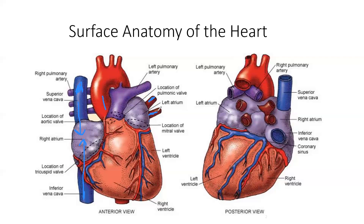It's reversed because normally in other areas of the body, arteries carry oxygenated blood and veins carry deoxygenated blood. But in the heart it's different. So it comes back via the pulmonary vein, dumps into the left atrium, then after the left atrium it goes into the left ventricle and then out to the aorta.